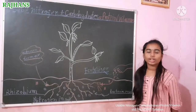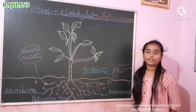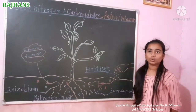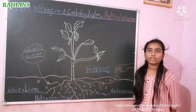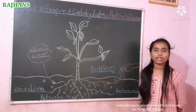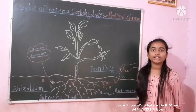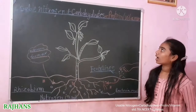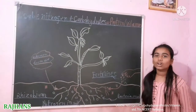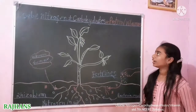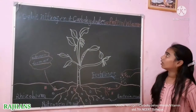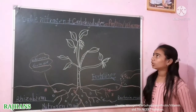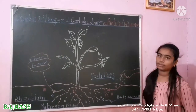From the soil, mineral nitrogen travels with water to the leaves, where it combines with carbohydrates to produce proteins and vitamins.